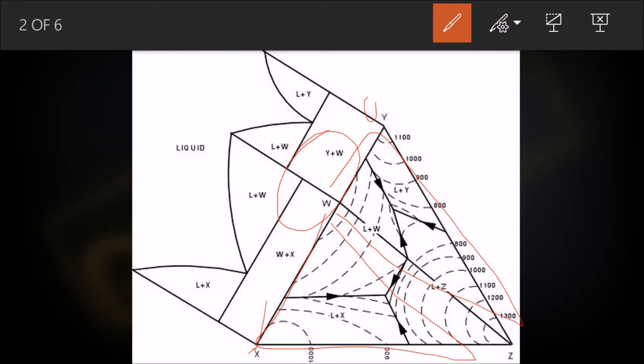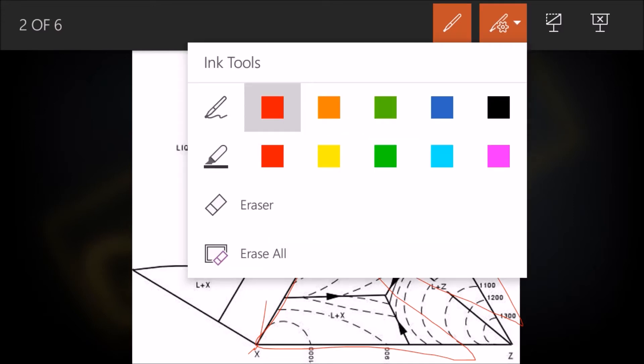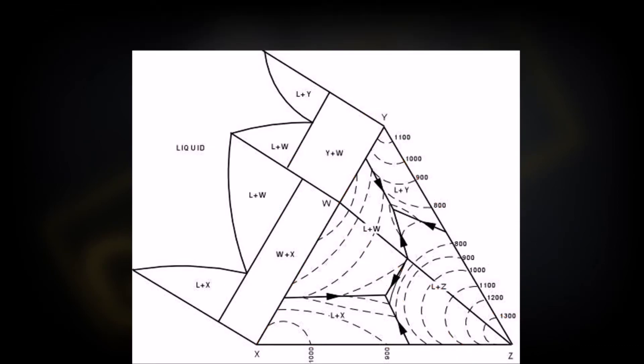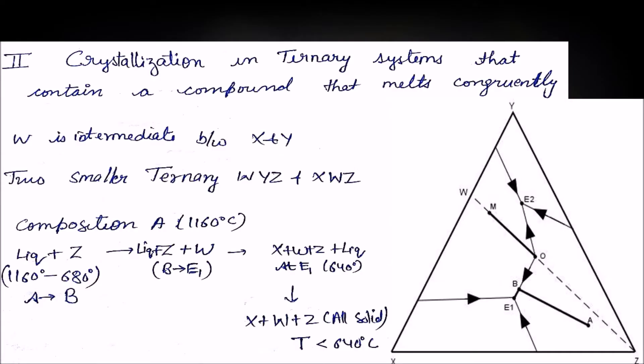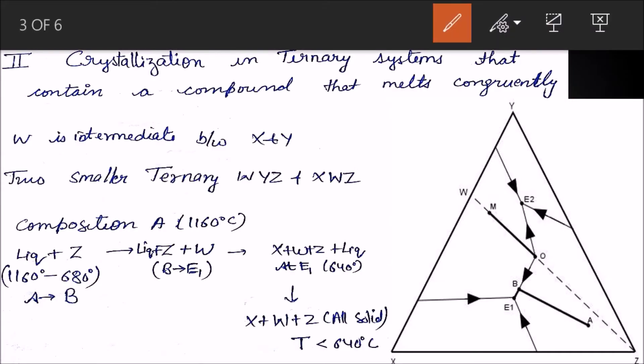As in the previous lecture we have seen triangular composition with all binary eutectics, we have to consider these two triangles just the same. Let's see with an example. Consider the point A here.